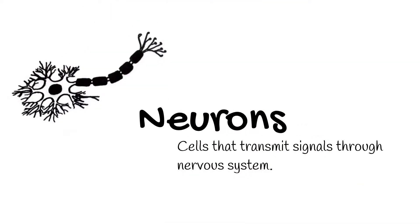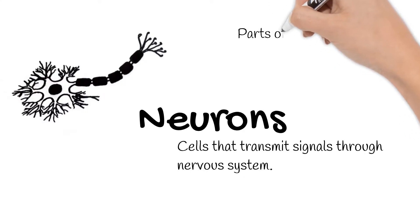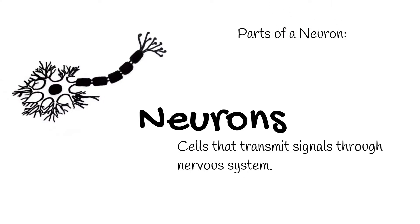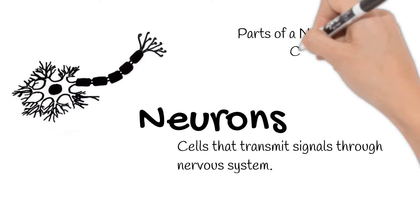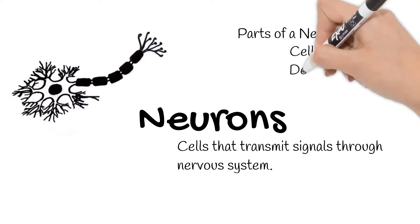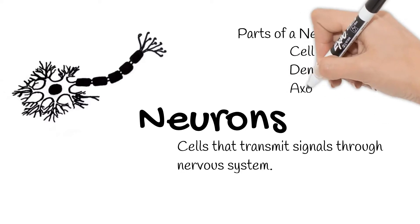Let's start with the parts of a neuron. Every neuron has three main parts: cell body, dendrites, and axon.